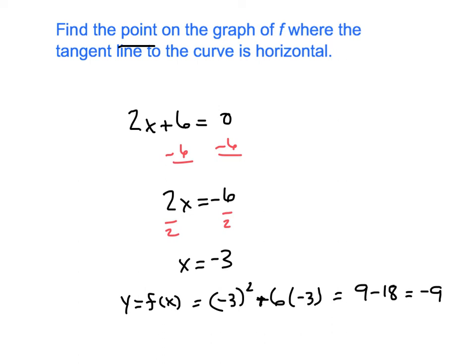Okay, so the point itself that we're looking for is negative 3 comma negative 9. And we kind of knew that this was going to happen, but this is just the vertex of the parabola, right? x squared plus 6x is a parabola. The horizontal tangent line is going to hit at the vertex.